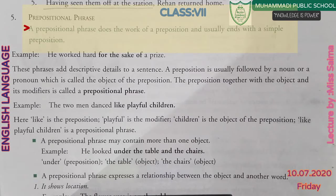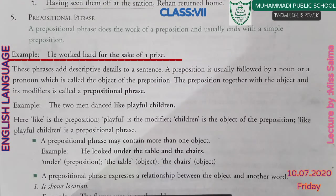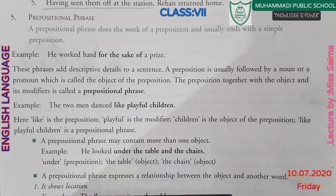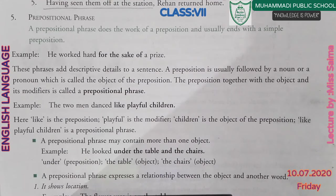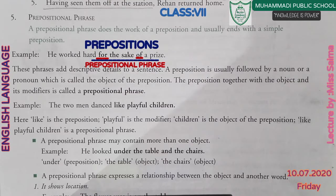A prepositional phrase does the work of a preposition and usually ends with a simple preposition. For example: 'He worked hard for the sake of a prize.' In this sentence, 'for' and 'of' are both prepositions, and 'for the sake of' is the prepositional phrase.